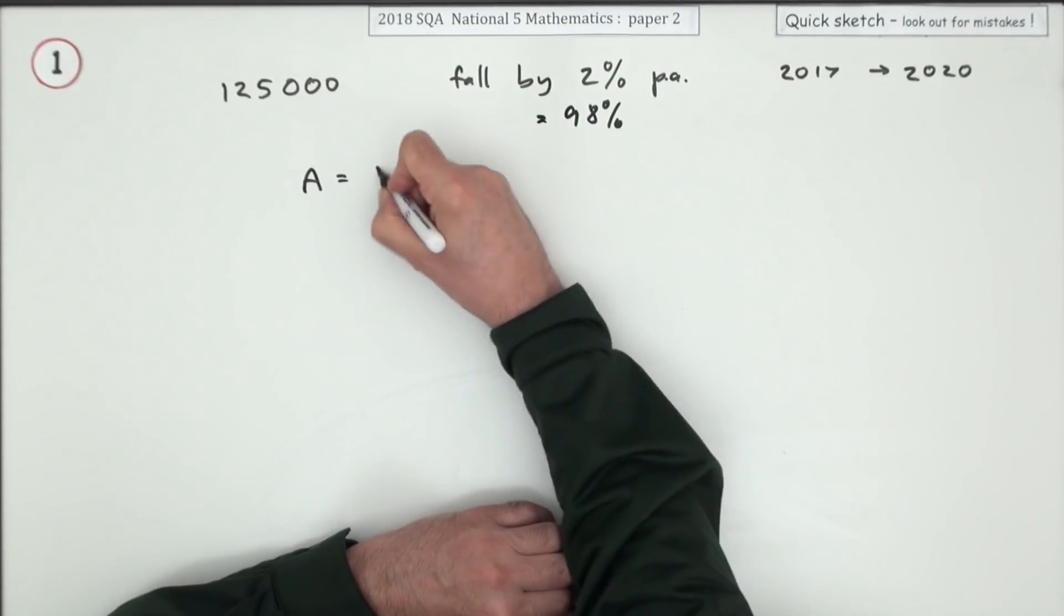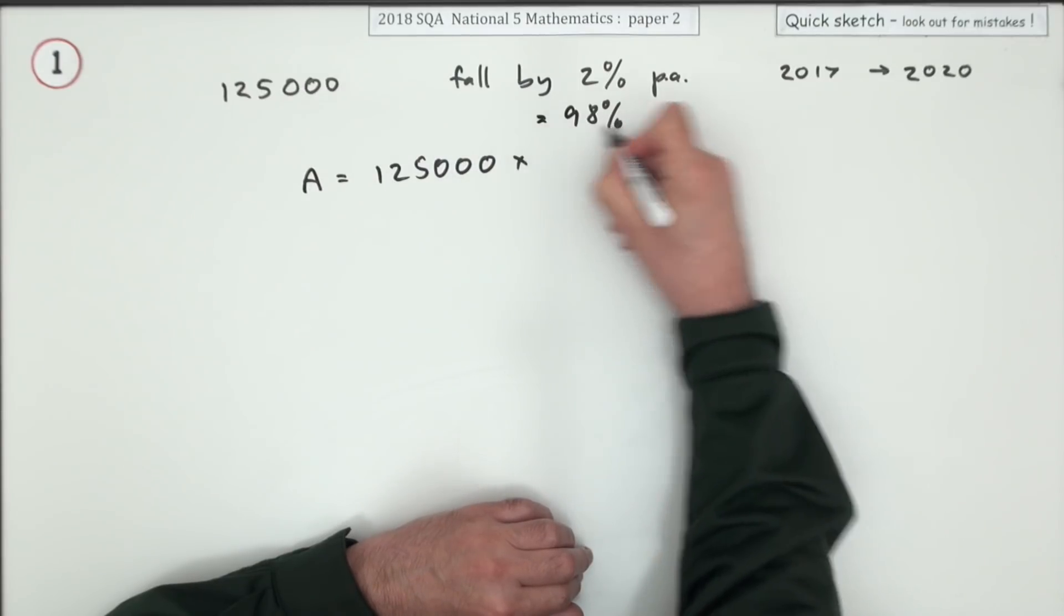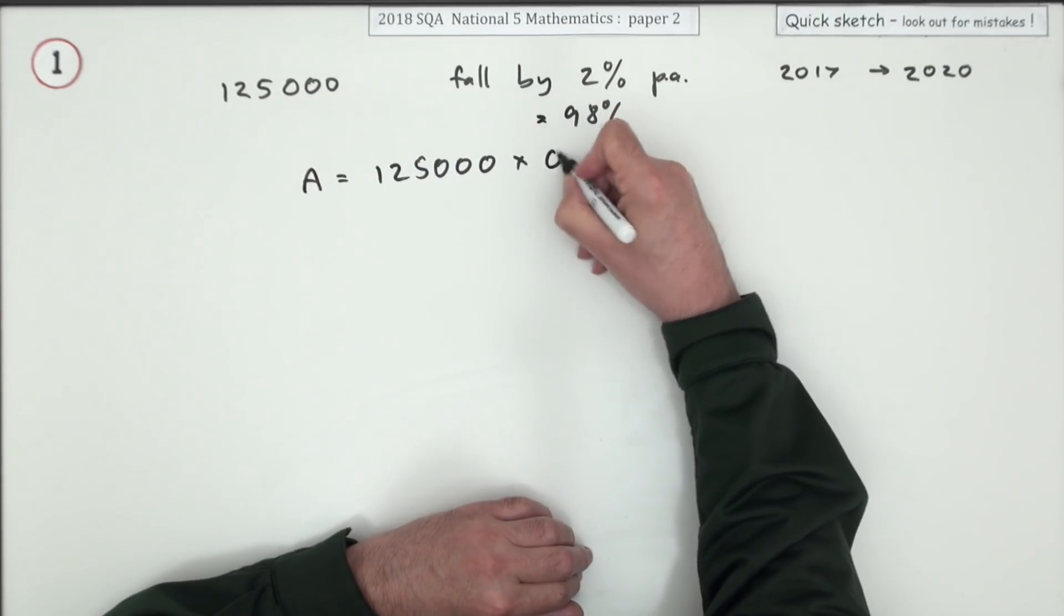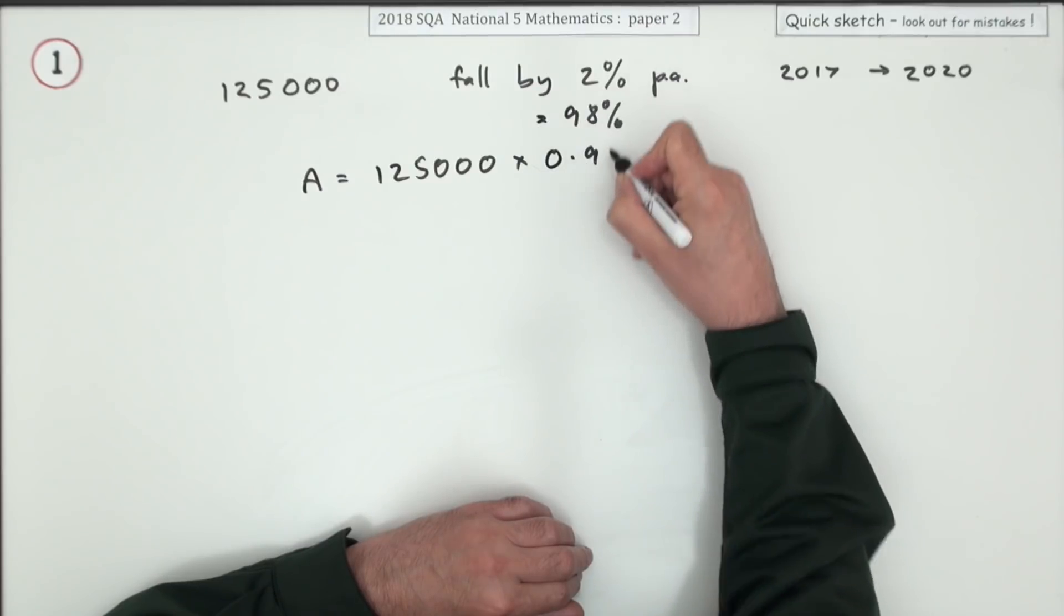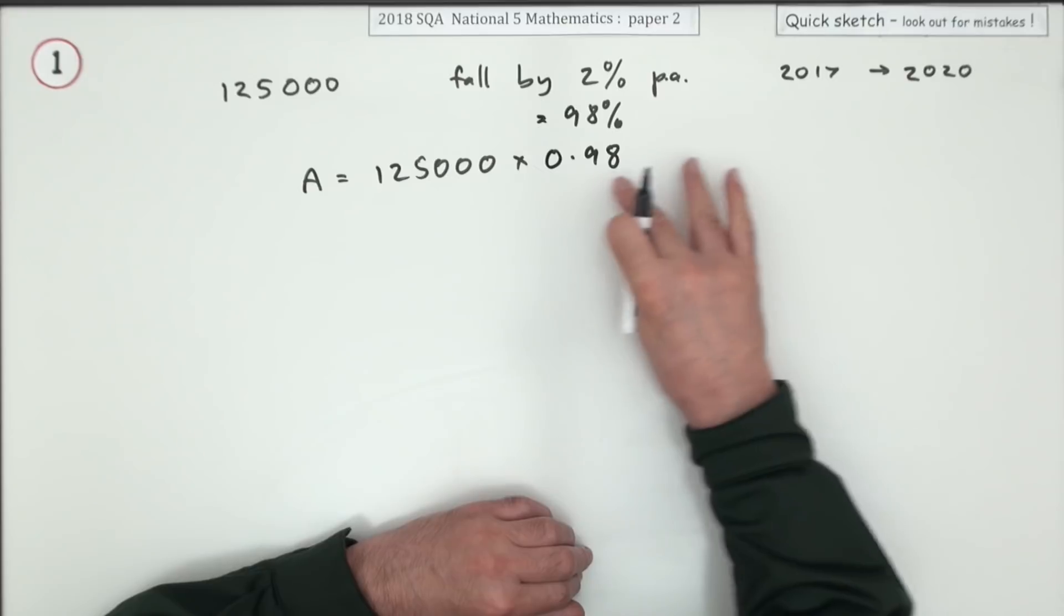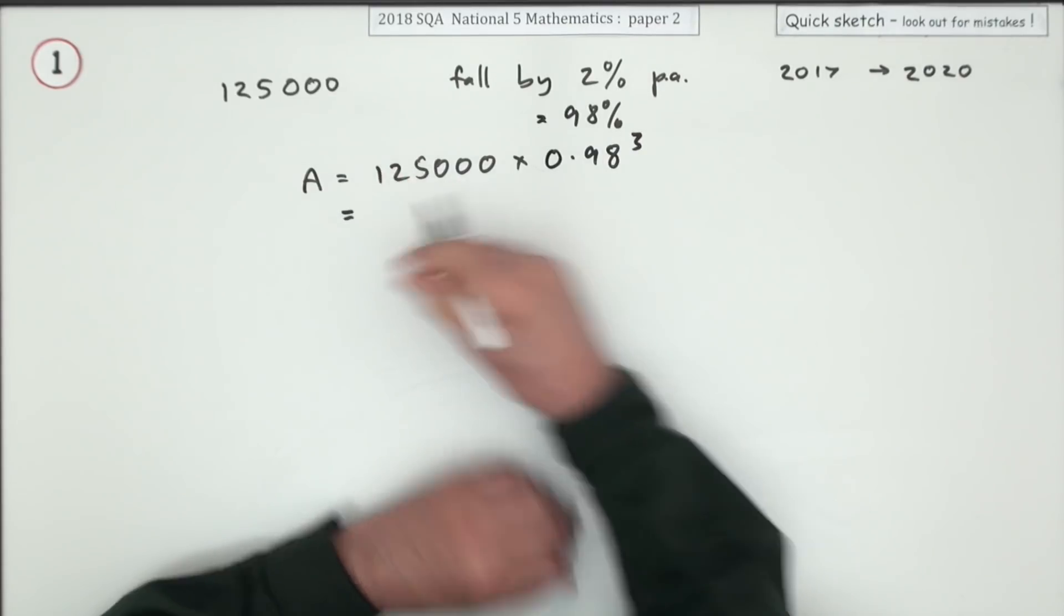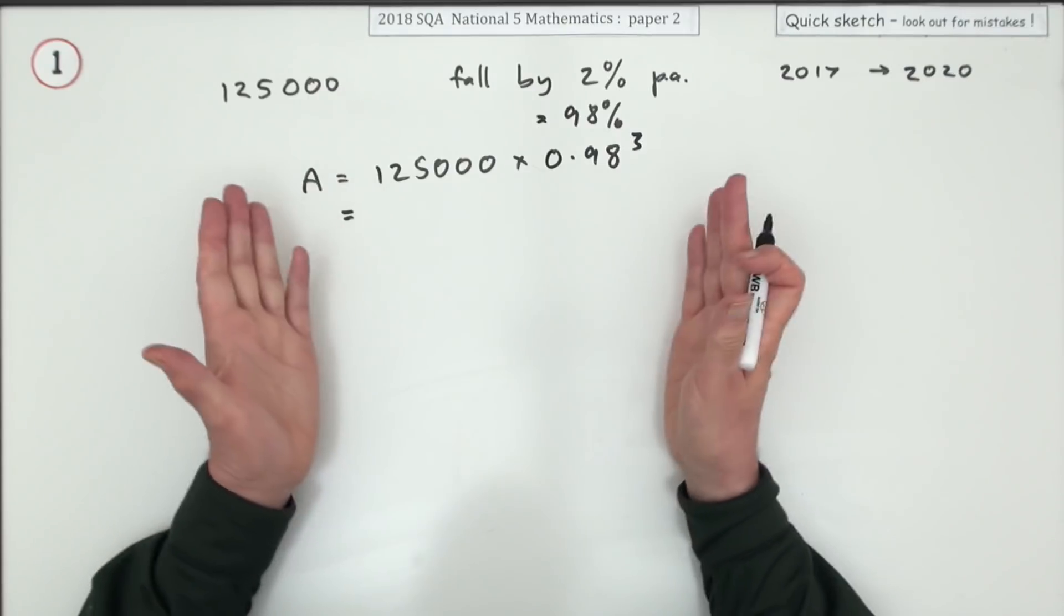So the amount you'd expect would be 125,000, 98% written as a decimal over 100 divided by 100 is 0.98. And if that's going to happen three times, because there's three years there, it's the power 3. You just put that in your calculator and that'll be your answer.